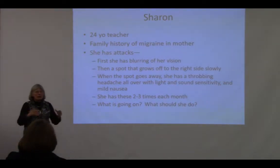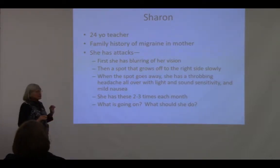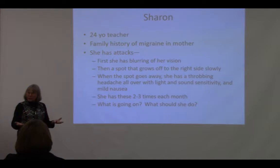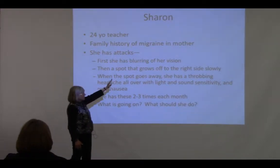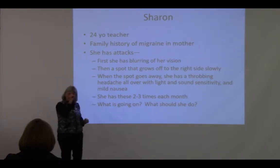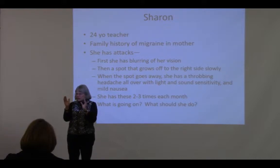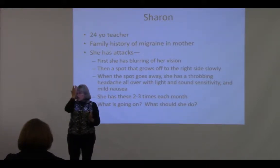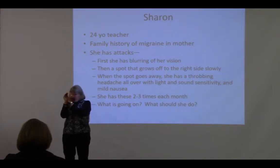Let me take you through some cases based on real people. Sharon is a 24-year-old teacher with a family history of migraine. During her attacks, she first has some blurring of vision, then sees a little spot. That spot can be in one eye or both eyes — it's important to cover each eye to determine which. If it's in one eye, it's usually something in the eyeball; if it's in both eyes, it's coming from the brain.